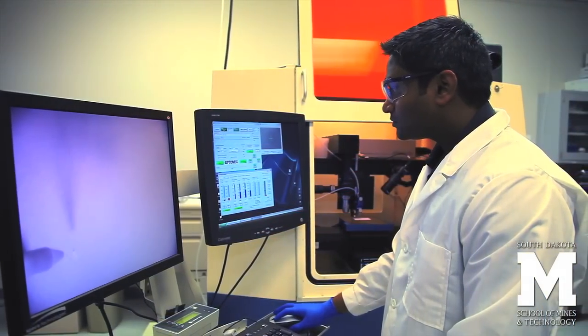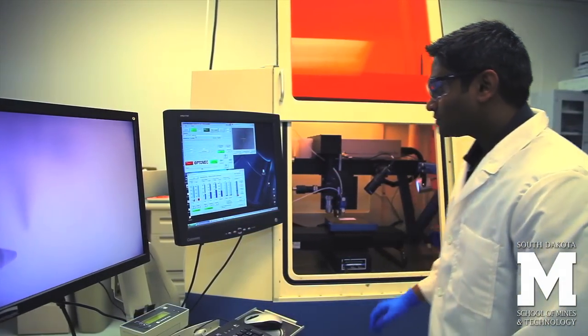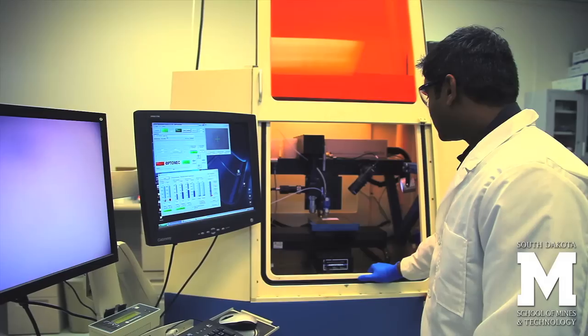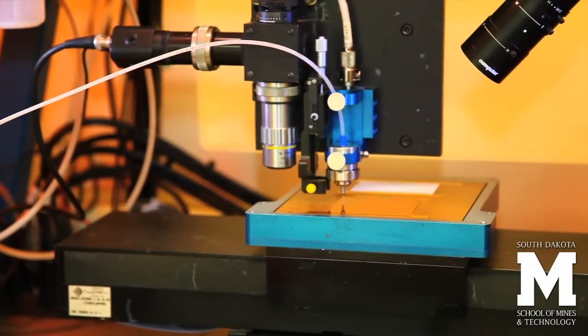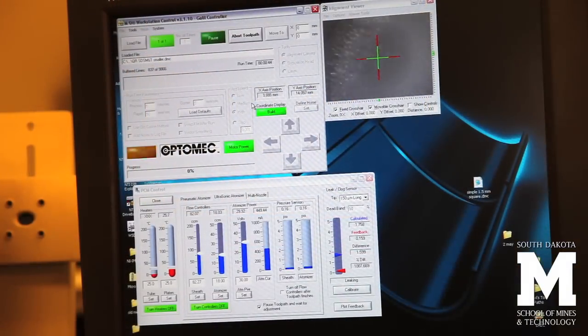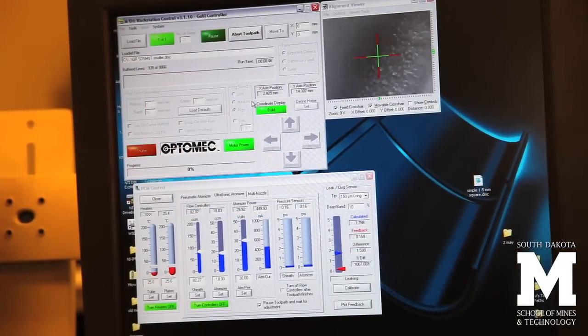We start printing using our ink. This is the ultrasonic atomizer we have, and we usually use one ml of ink in the vial. Once we give the atomizer value, it starts atomizing the ink.